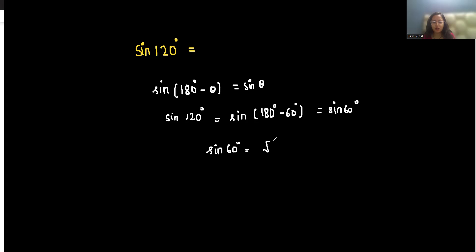It is root 3 by 2, which is approximately 0.866. Sine 120 degrees in terms of fraction is root 3 by 2, and in terms of decimal is approximately 0.866.